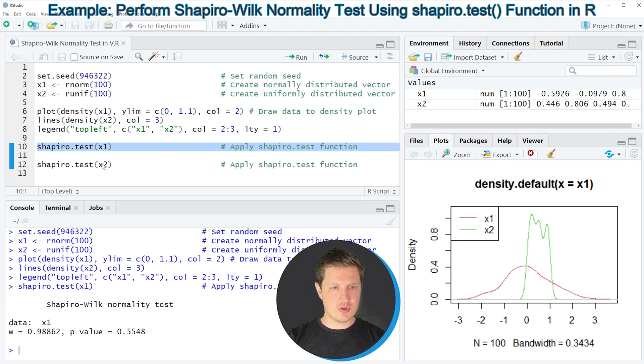If you run this line of code you can see that at the bottom in the RStudio console some output has been created, and the most important value that has been returned by this output is the p-value.